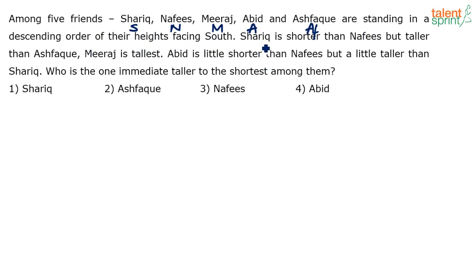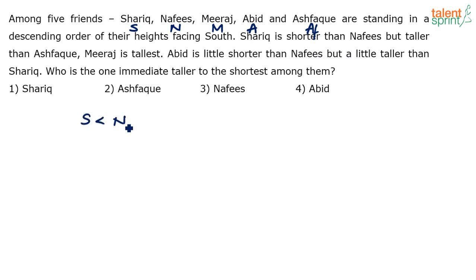Descending order of their heights means the tallest person is first and the shortest person is at the end. Now, Sharik is shorter than Nafis — so S is less than N — but taller than Ashwaq. So Sharik is shorter than Nafis but Sharik is taller than Ashwaq.